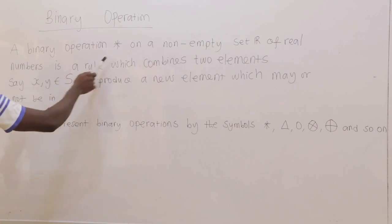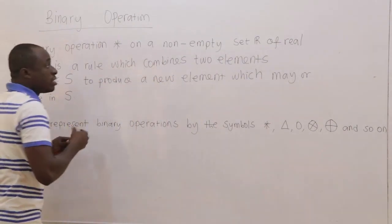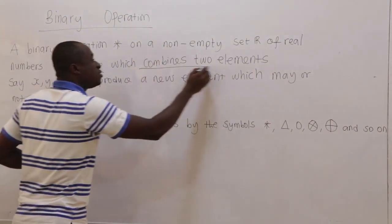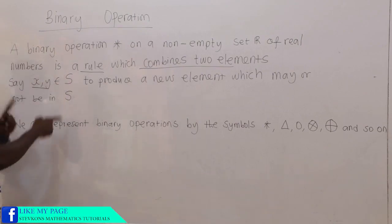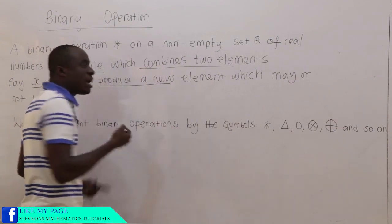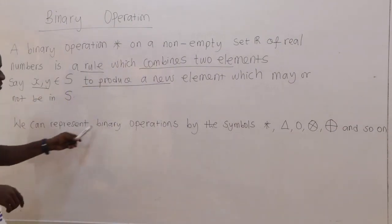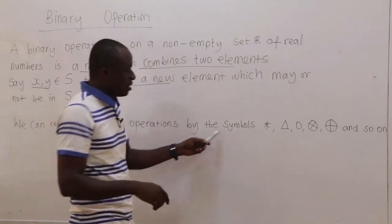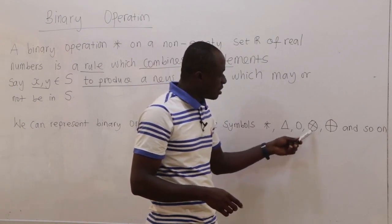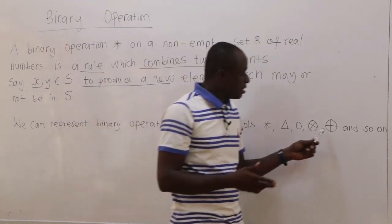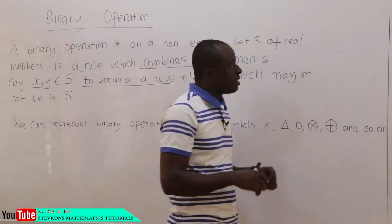So a binary operation star on a non-empty set S is a rule which combines two elements, say x and y, members of a particular set S, to produce a new element which may or may not be in the set S. We can represent binary operations by symbols such as star, delta, naught, a circle with a multiplication sign, a circle with an addition sign, and so on. Now let's consider the first example.